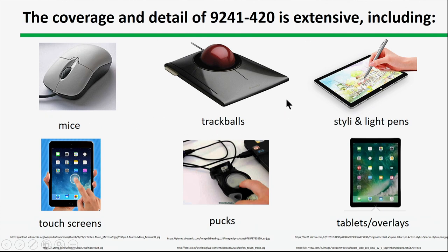There are a wide range of devices beyond these covered in this document: specifications for mice, a rather lengthy section on trackballs, styli and light pens, touch screens, pucks, and tablets and overlays. This is an extensive document with a lot of detail. If you're designing or selecting these kinds of devices, ISO 9241-420 should be something you look at very carefully — you should have a copy of it. With that, I'm going to take a quick break and then move on to part two, which has to do with systems and software quality requirements and evaluation, commonly referred to as SQuaRE.